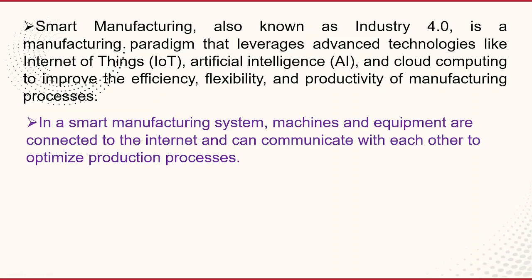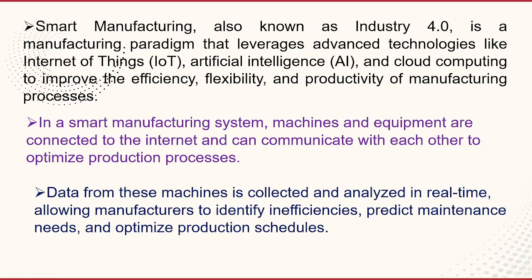In a smart manufacturing system, machines and equipment are connected to the internet and can communicate with each other to optimize production processes. Data from these machines is collected and analyzed in real time, allowing manufacturers to identify inefficiencies, predict maintenance needs, and optimize production schedules.